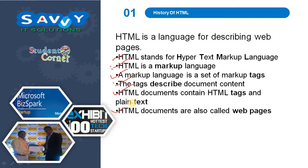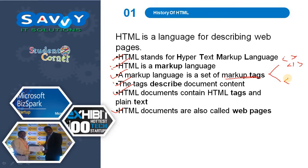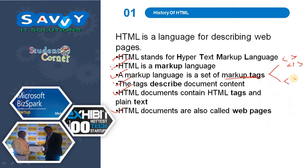Markup tags are of two types: paired tags and non-paired tags. Paired tags have both a starting and an ending tag. Non-paired tags have only one tag.